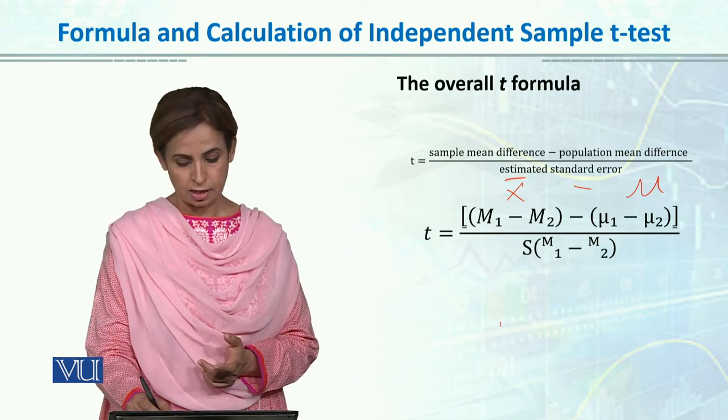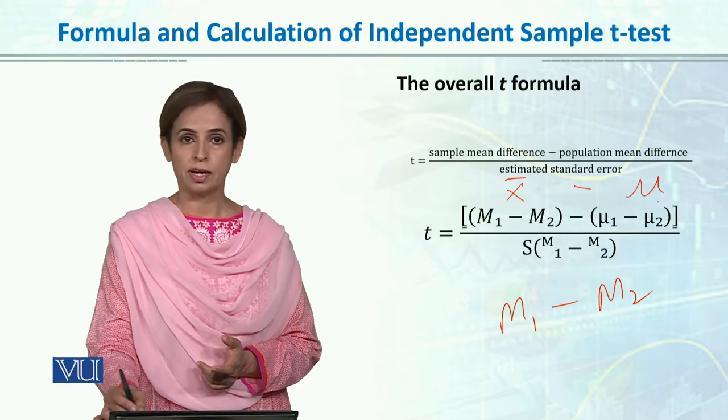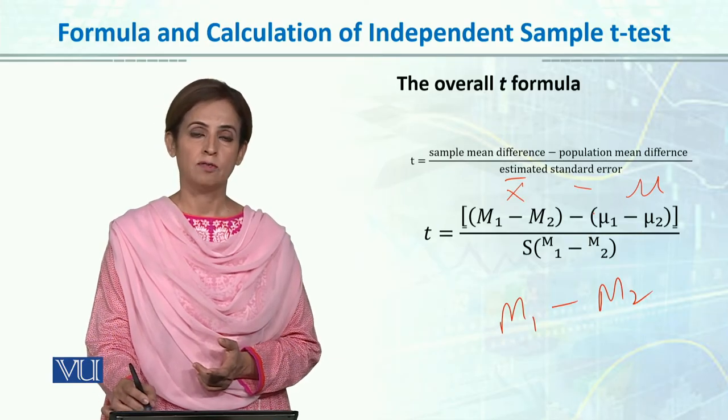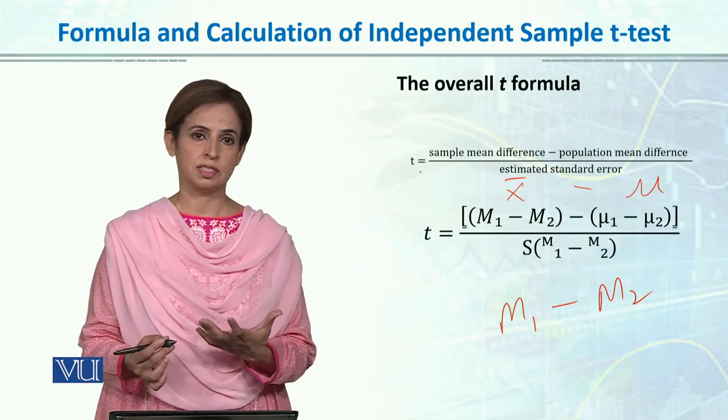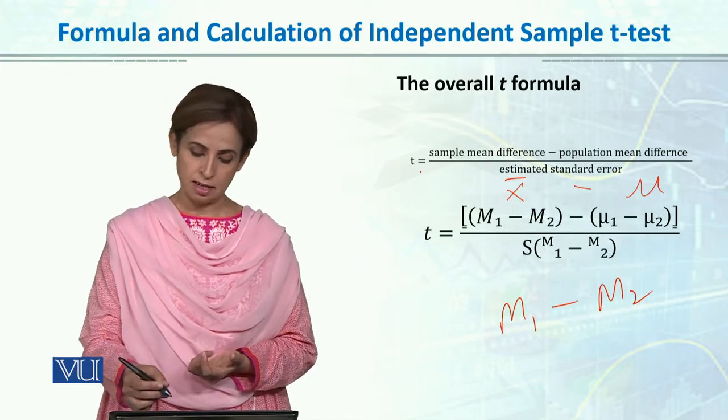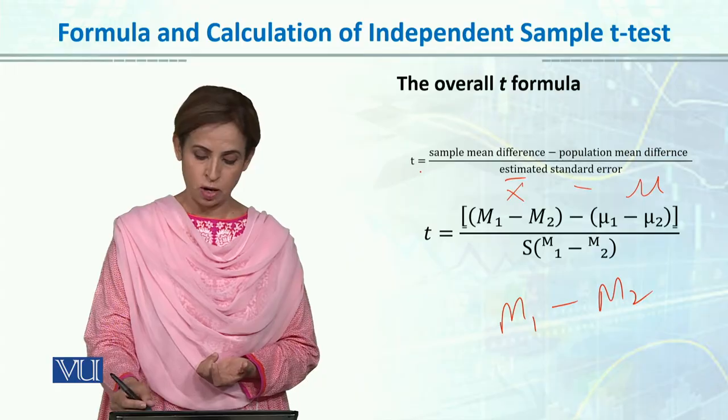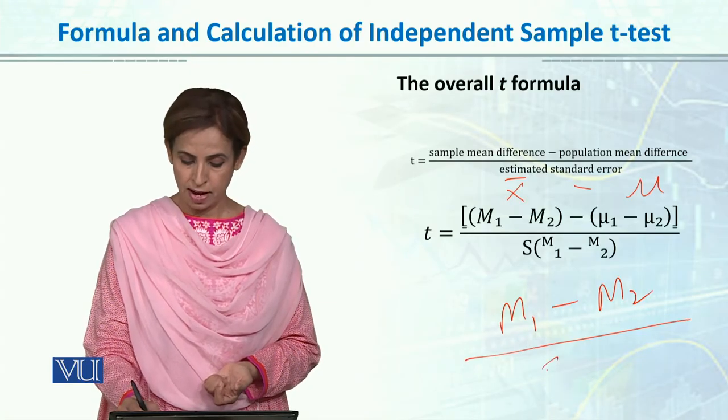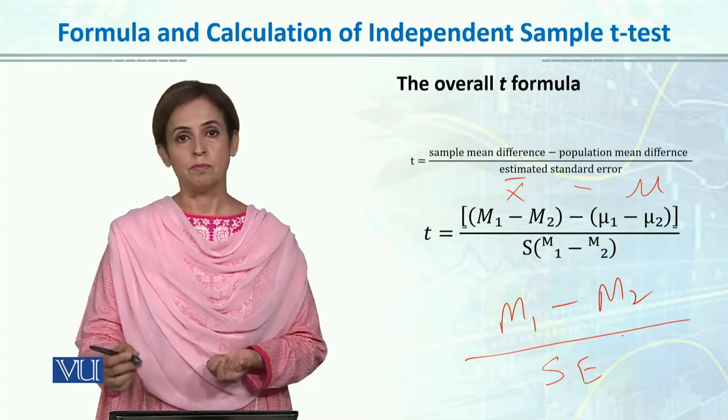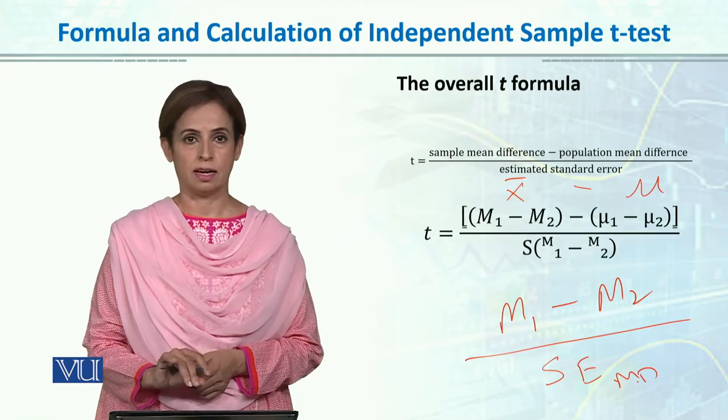If you want to simplify and write it, you can definitely write it as mean 1 minus mean 2, because we don't know the population figure. We are mainly interested in whether the difference between group 1 and group 2 is significant. For instance, we're comparing boys and girls - what is the boys' mean and girls' mean - and we will divide it by the standard error of mean difference.